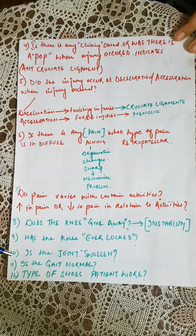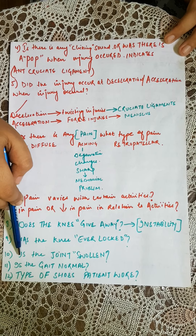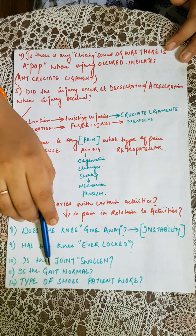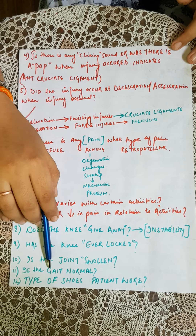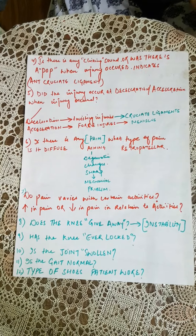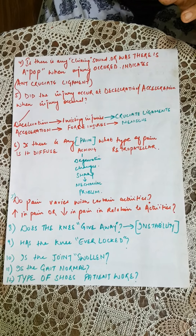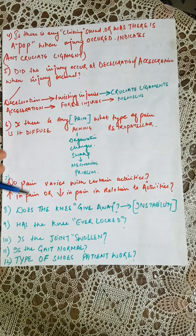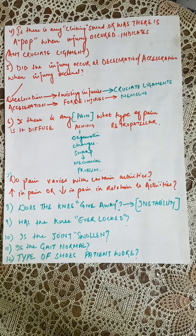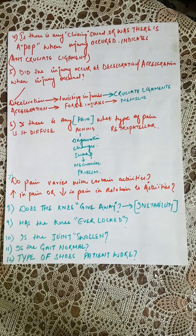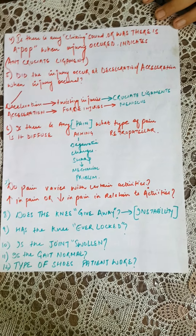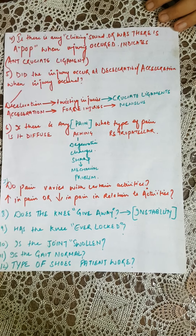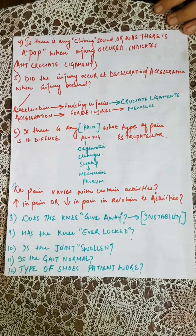The next question concerns gait — is it normal or not? The examiner should ask whether the patient is able to bear full weight on the affected side, because due to pain, patients sometimes do not put their entire weight on the affected limb.